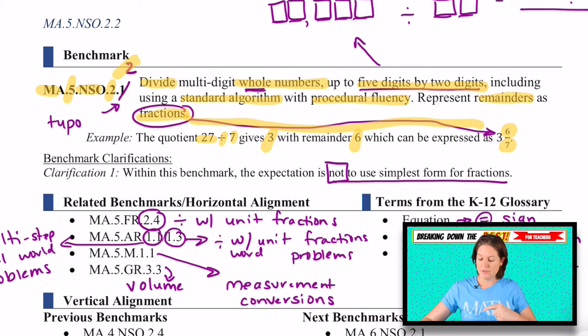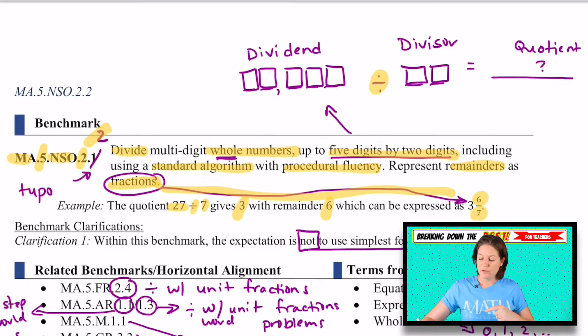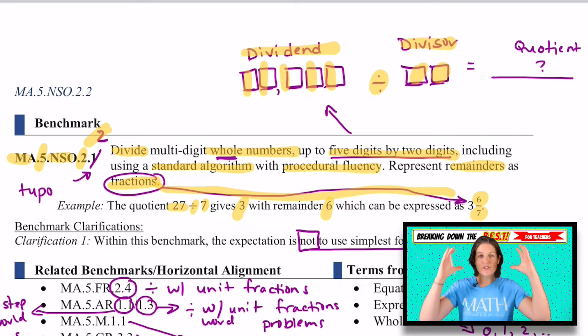All right, let's take a closer look at the standard though. It said that we are dividing, right? So we're dividing up to five digits right there. That would be our dividend, a five digit dividend divided by a two digit divisor. Our dividend is the total amount that we're taking and separating out. Our divisor is either how many groups we're putting something into or how many are in each group.